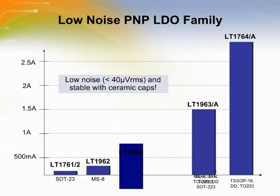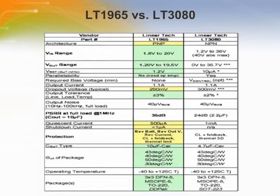The LT1965 may be thought of as a lower current version of the LT1963A and a higher current version of the LT1763, which are all part of Linear Technology's PNP LDO regulator family. The closest LDO in current rating is the LT3080, also rated up to 1.1 amps. Key differences include architecture — the LT1965 uses a PNP transistor while the LT3080 uses an NPN transistor — as well as dropout voltage, protection features, output accuracy, and paralleling method. The LT1965 requires an external op amp for paralleling, while the LT3080 is directly paralleled. The LT1965 uses a voltage reference while the LT3080 uses a current reference.